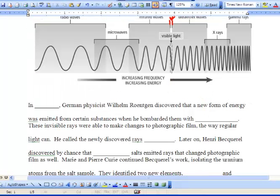So in 1895, German physicist Wilhelm Roentgen discovered that a new form of energy was emitted from certain substances when he bombarded them with electrons. So basically, he shot electrons at certain substances and they emitted energy.